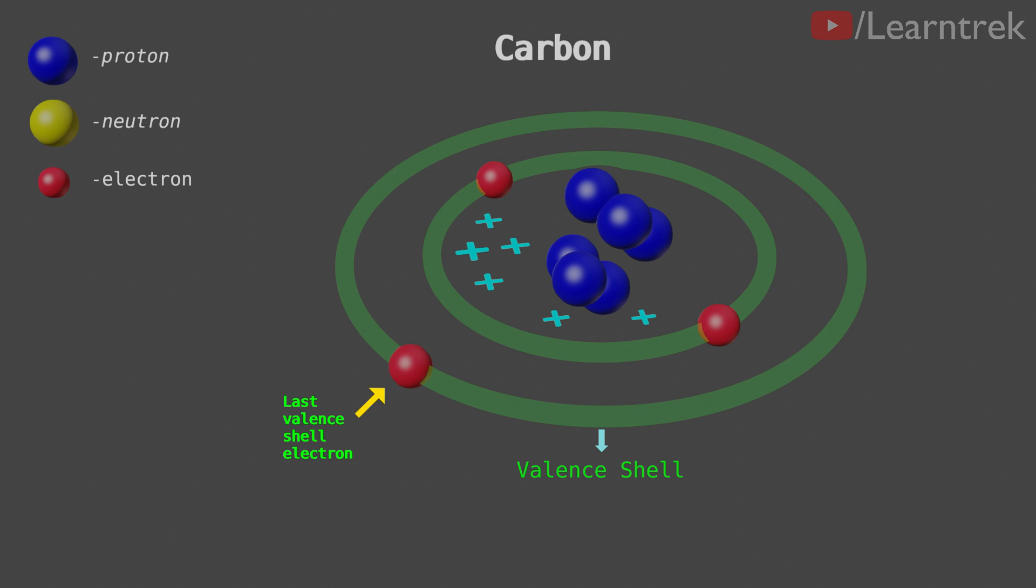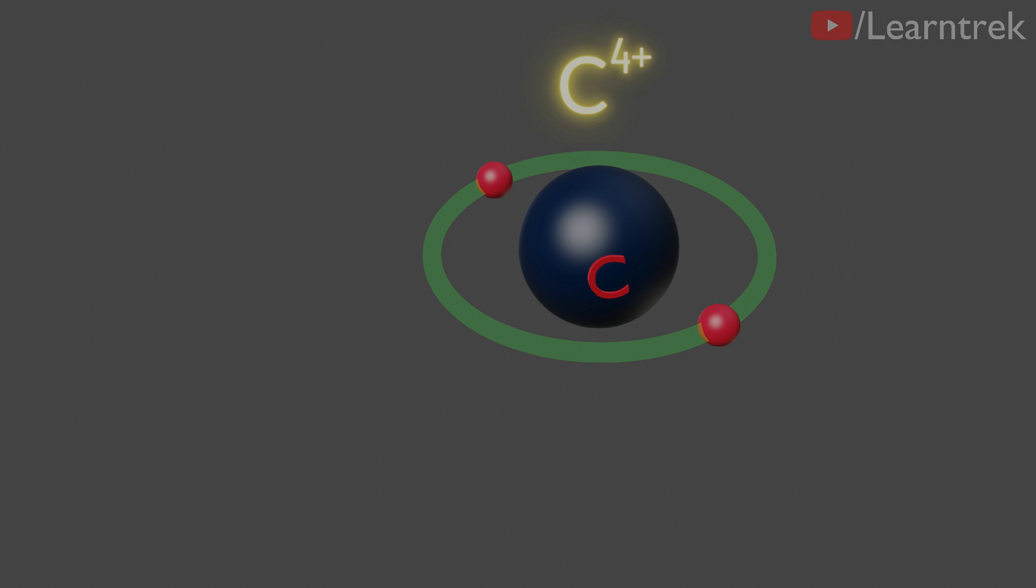The last valence shell electron will require the most amount of energy to remove. However, if all 4 valence shell electrons are removed, then carbon will become a C4 positive cation.